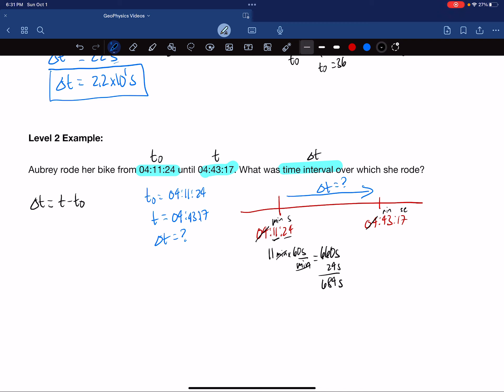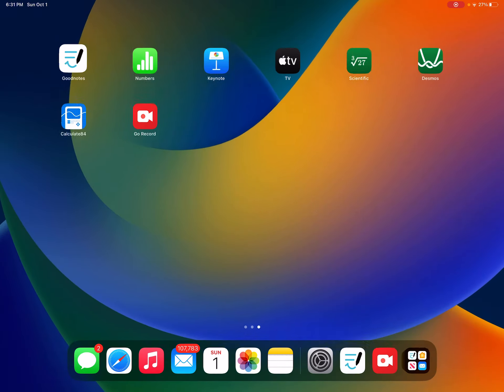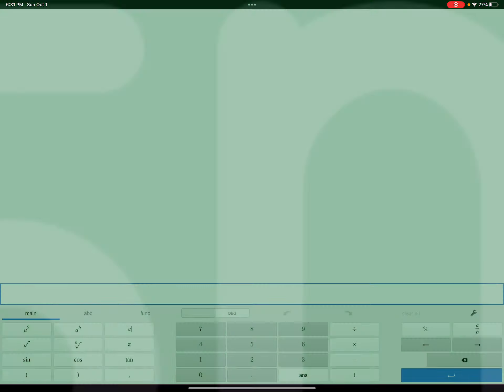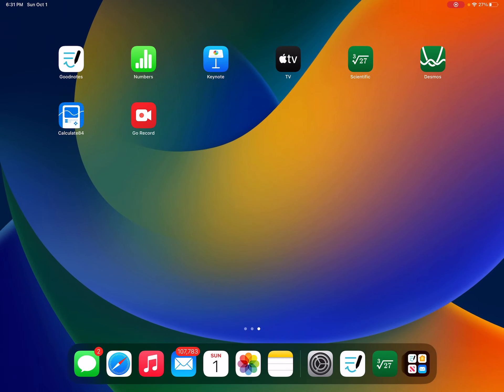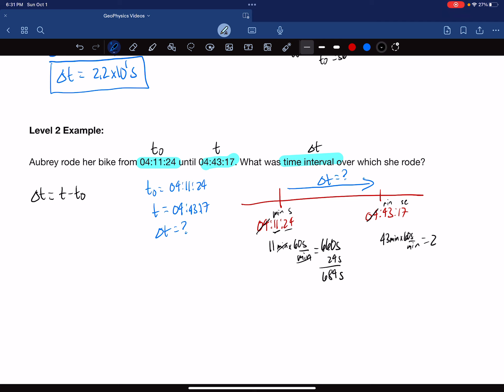If we do the same thing over here, we have 43 minutes times 60 seconds per minute. We can flip open our calculator and say 43 times 60, that is 2,580 seconds. Plus there are 17 more, giving us 2,597 seconds.